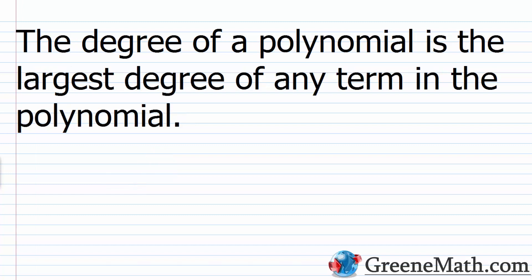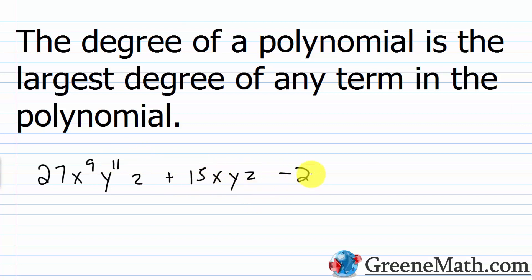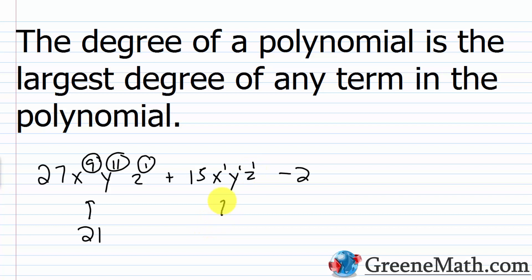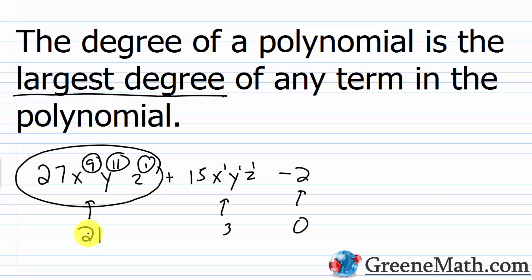The degree of a polynomial is the largest degree of any term in the polynomial. For example, take 27x to the 9th power y to the 11th z, plus 15xyz, minus 2. The degrees of each term are: 9 plus 11 plus 1 equals 21 (remember, a variable with no visible exponent is implied to be 1), then 1 plus 1 plus 1 equals 3, and the constant has degree 0. The largest is 21, so the degree of the polynomial is 21.